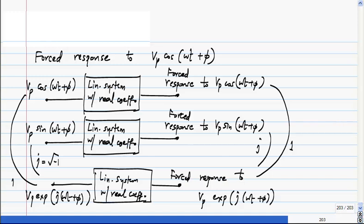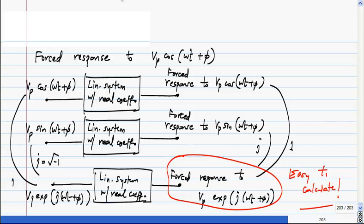So the point is that this is easy to calculate. But what we are really interested in is the response to Vp times cos(ωt + φ). That is the signal we are feeding in. Now because the linear system had only real coefficients, the only place where you get this square root of minus one or the j, the imaginary part, in the whole picture is because you multiplied it here.